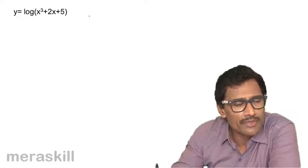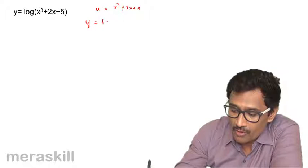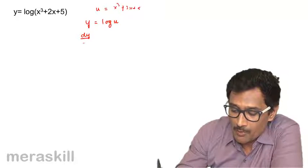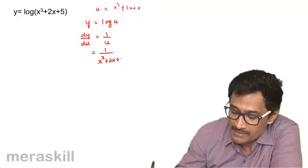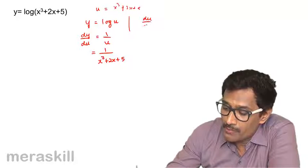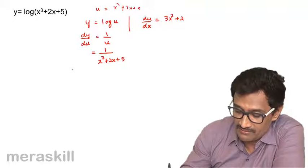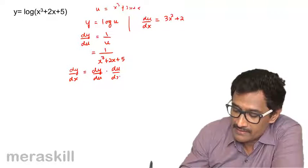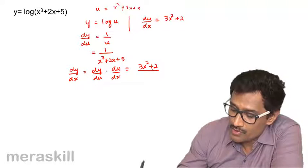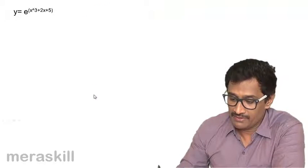For the initial examples, I will use the concept of u. Let u = x³ + 2x + 5, so y = log u. Then dy/du = 1/u = 1/(x³ + 2x + 5). And du/dx = 3x² + 2. So dy/dx = dy/du × du/dx = (3x² + 2)/(x³ + 2x + 5).